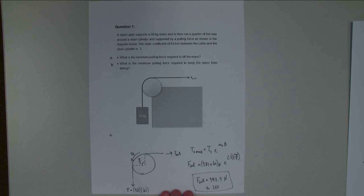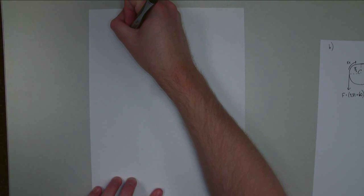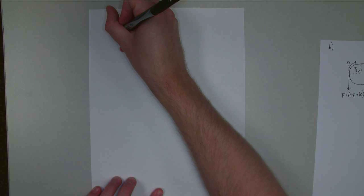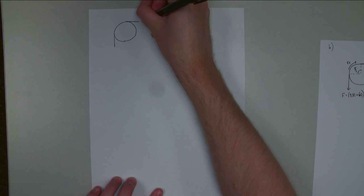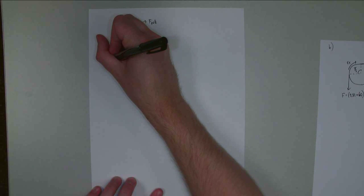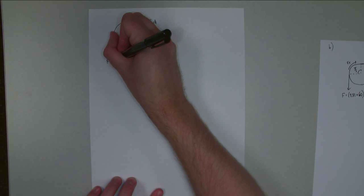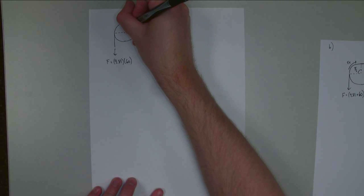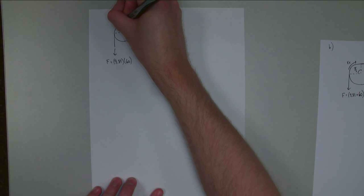If we move on to part B, we are going to have some of the same stuff, but it's going to be a little bit different. Let's draw our diagram again. We are going to have the cable coming off in two locations. This one up here is going to still be F pull. And this one down here is still the weight force, which is 9.81 times 60. Still have the same contact angle of pi over 2 radians.